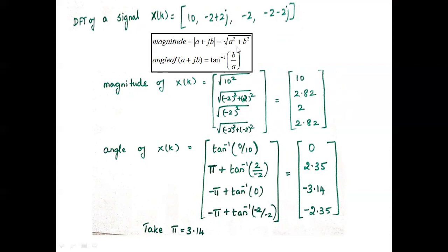In the next step we compute the magnitude and the angle. The magnitude is √(a² + b²) and the angle of a+jb is tan⁻¹(b/a). The magnitude of X(K) is [10, 2.82, 2, 2.82] and the angle of X(K) is [0, 2.35, -3.14, -2.35], where π is 3.14. The angle varies based on the quadrant.